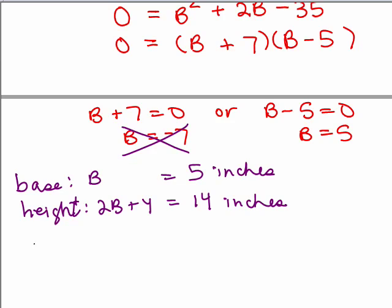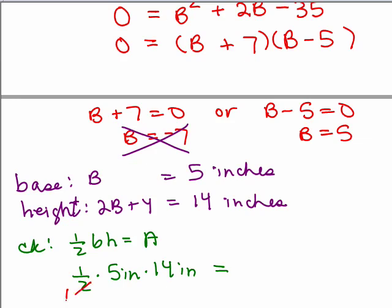Okay, so we're going to check to see if it's true that one half base times height is going to equal the area. So, one half times 5 inches times 14 inches, let's see what that equals. Well, the 2 goes into the 14, and I get 35 inches times inches, hmm, yeah, that's what it said. It said that the area should be 35 square inches.